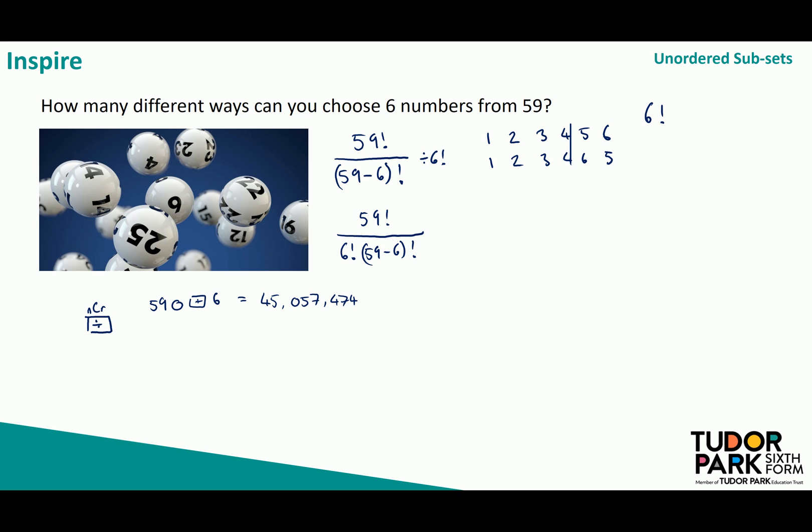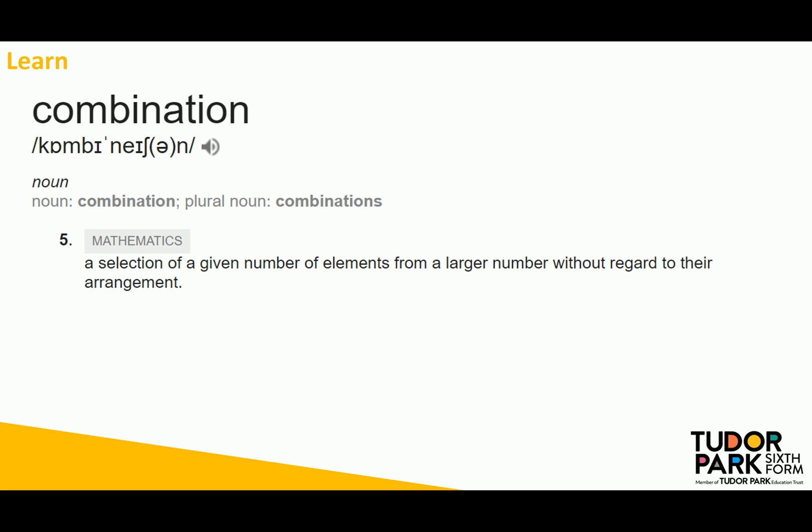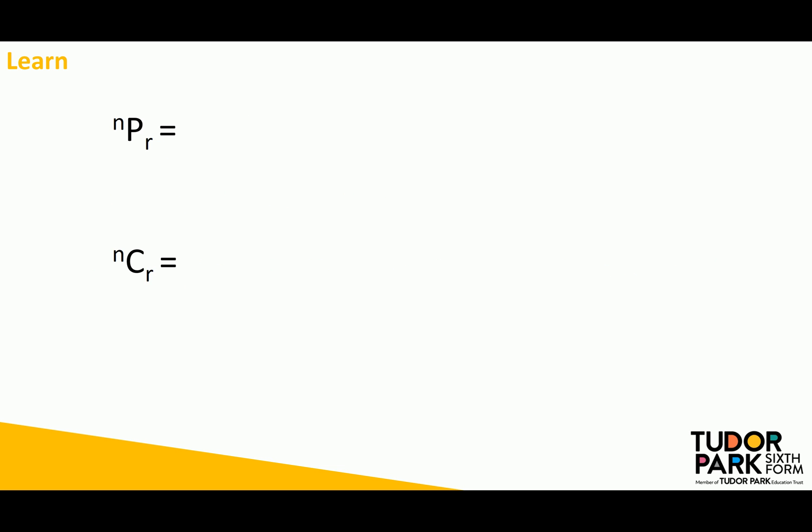If we want a generalized version of this I'm picking r objects from n then obviously our formula is going to become n factorial over r factorial n minus r factorial and that's exactly what a combination is. So a combination is a selection of elements from a larger number without regard for their arrangement. So so far we've talked about n permute r which was n factorial over n minus r factorial where order did matter. If I'm looking at combinations I'm looking at n factorial over r factorial n minus r factorial where order doesn't matter because I've divided out that different order.